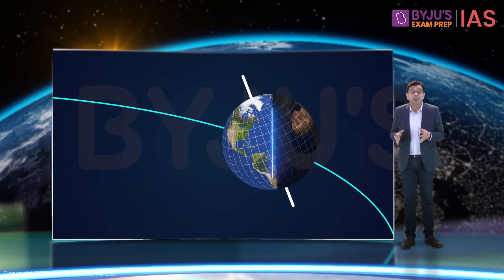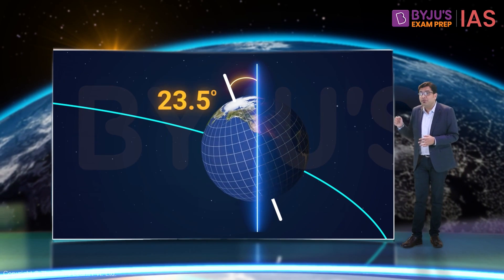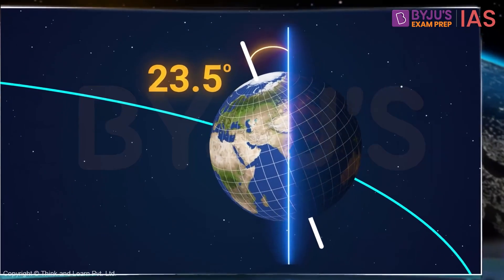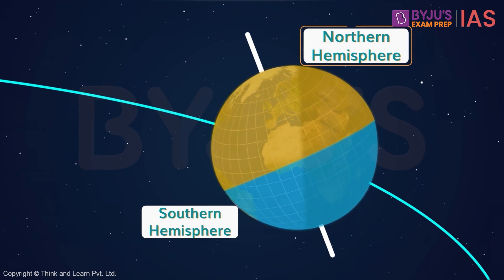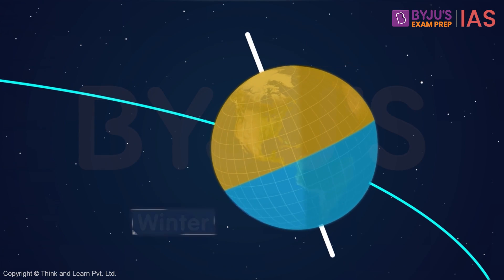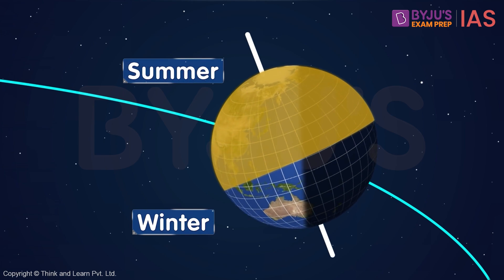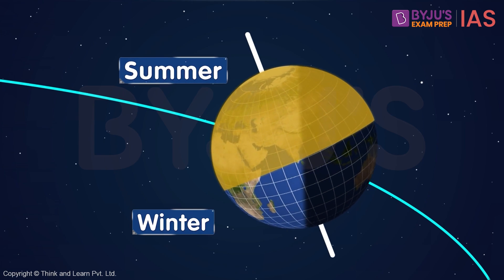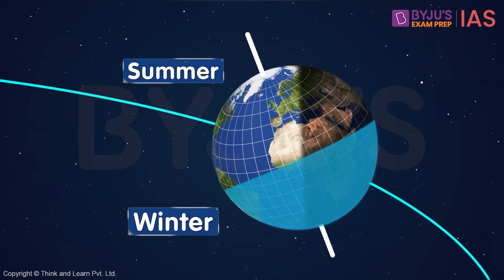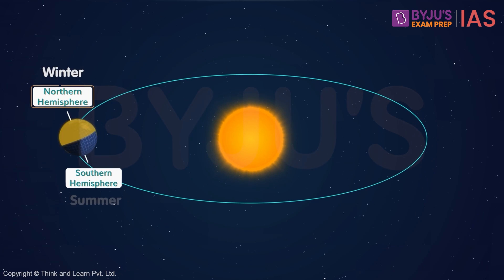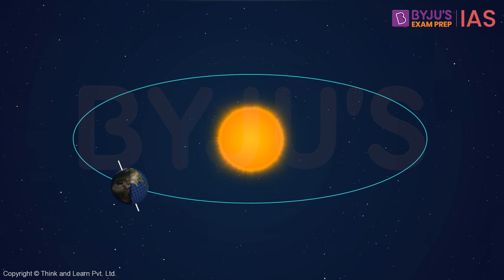We know the Earth's axis is tilted at 23.5 degrees as it goes around the sun in an elliptical orbit. Because of this, the northern and southern hemispheres experience their respective winter and summer seasons. When the northern hemisphere is tilted towards the sun, it is summer in the north and winter in the south, and the situation is completely reversed after a six-month period.